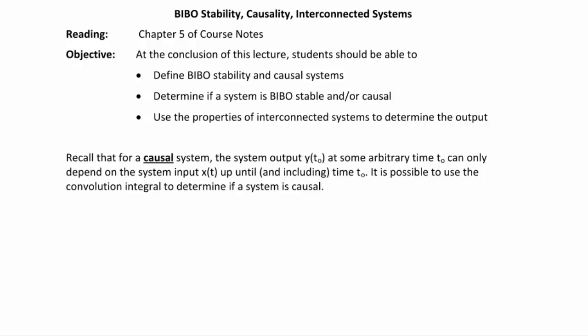The purpose of lecture 6-2 is to define BIBO stability in causal systems in terms of the convolution integral, determine if a system is BIBO stable and/or causal, and use the properties of interconnected systems to determine the output. Students should be reading chapter 5 of the course notes during this lecture.